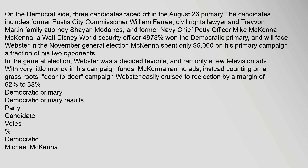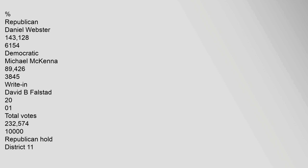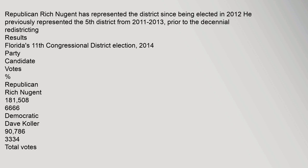Democratic Primary Results: Michael McKenna 11,912 (49.73%), Cheyenne Madara 7,324 (30.58%), William Ferry 4,718 (19.70%). Total Votes 23,954. General Election Results for Florida's 10th Congressional District: Republican Daniel Webster 143,128 (61.54%), Democratic Michael McKenna 89,426 (38.45%), Write-In David B. Falstead 200 votes. Total Votes 232,574. Republican Hold.